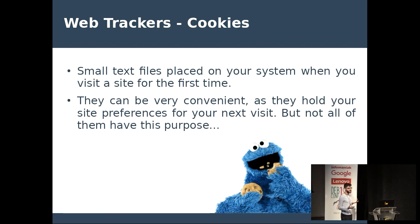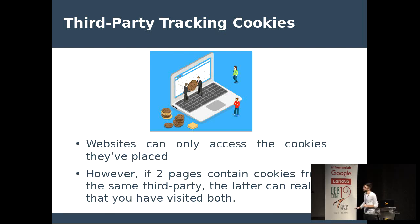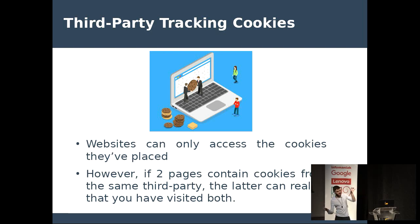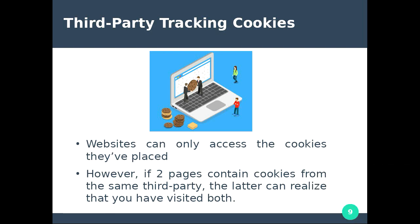The problem comes when third parties use cookies, because they don't use them to store your preferences — they use them to track you. A web page cannot see cookies from another web page. So if you visit a web page and a third party puts a cookie on your system through that page, and then you visit another web page where the same third party puts another cookie, that third party can see both cookies because they belong to it. It now has information about you from two different websites, and it can use that to serve you targeted advertising.